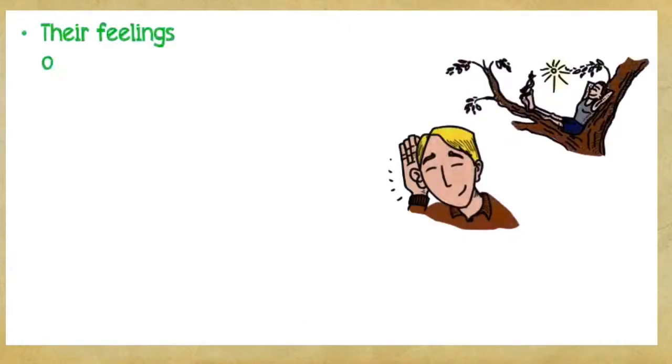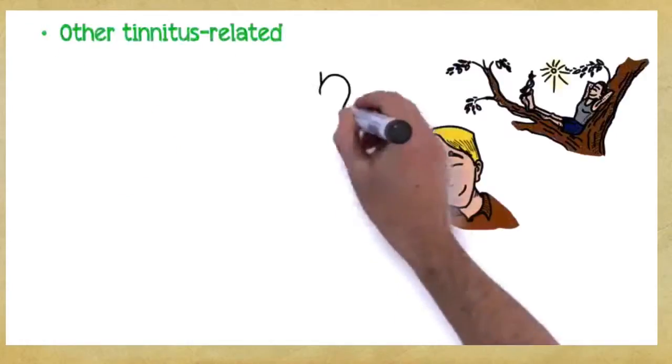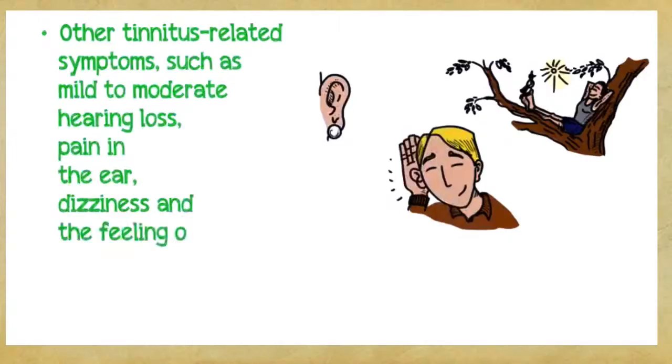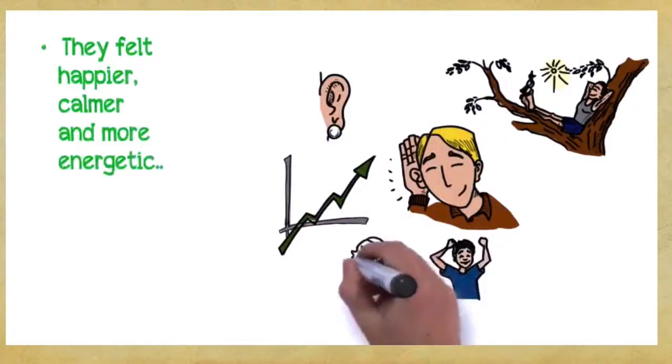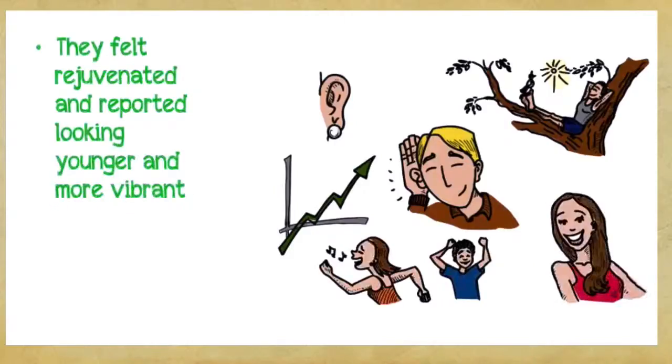All who used this method experienced the following benefits. The ringing, buzzing, hissing, beeping and other sounds became manageable very quickly and then completely vanished in less than 30 days. Their feelings of tension, anxiety, agitation and exhaustion vanished. Other symptoms such as hearing loss, pain in the ear, dizziness and fullness were eliminated. They felt happier, calmer and more energetic.